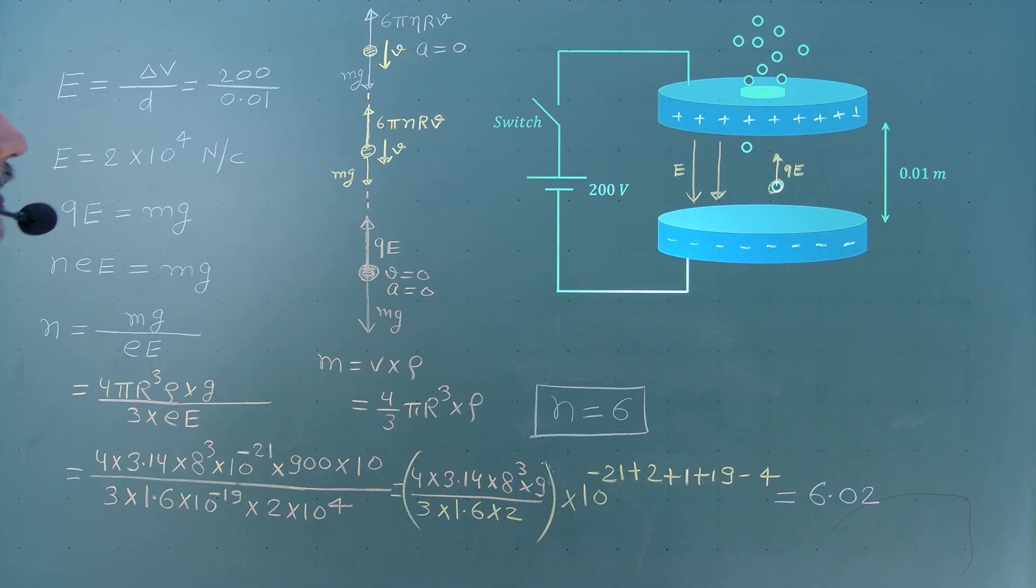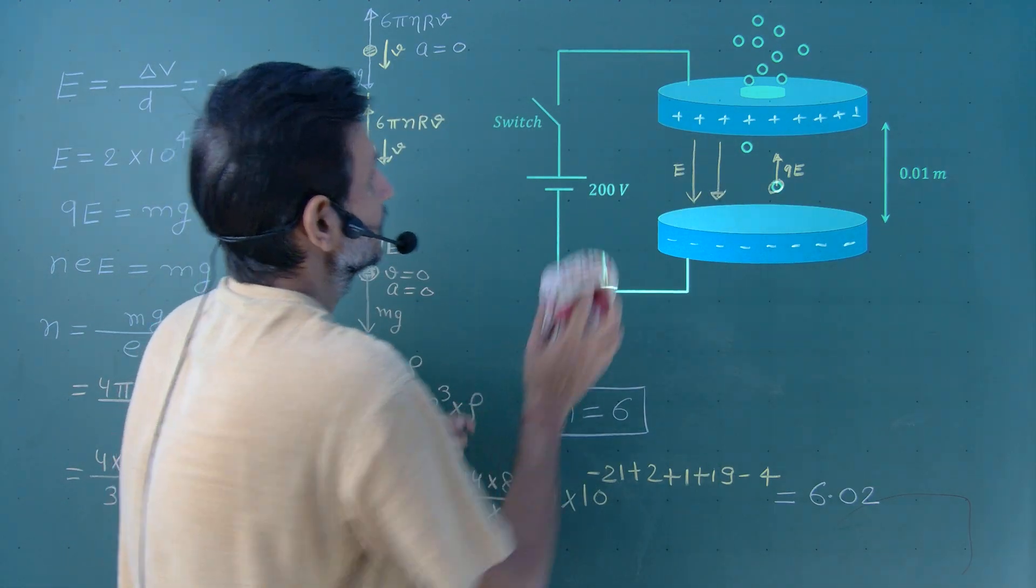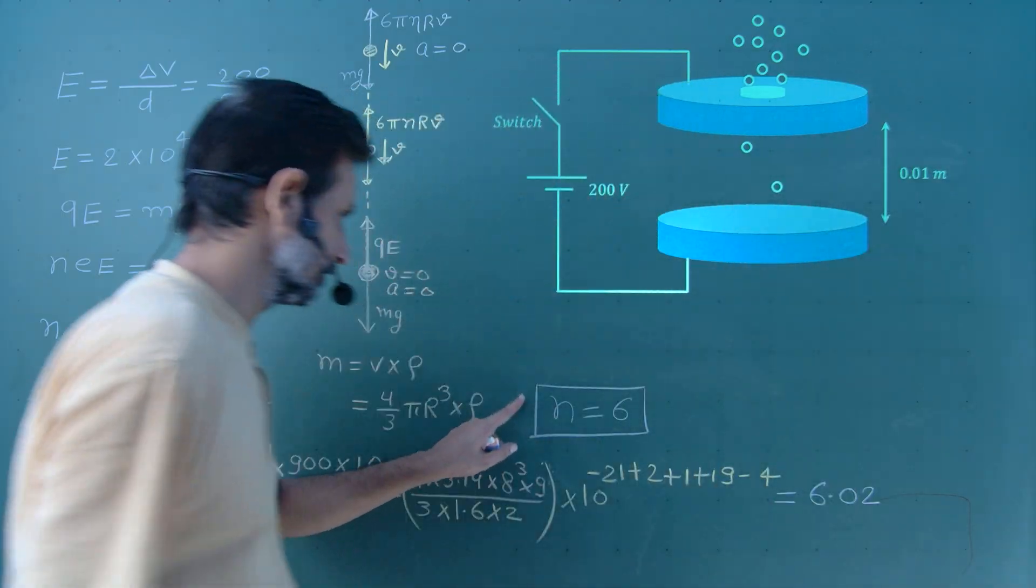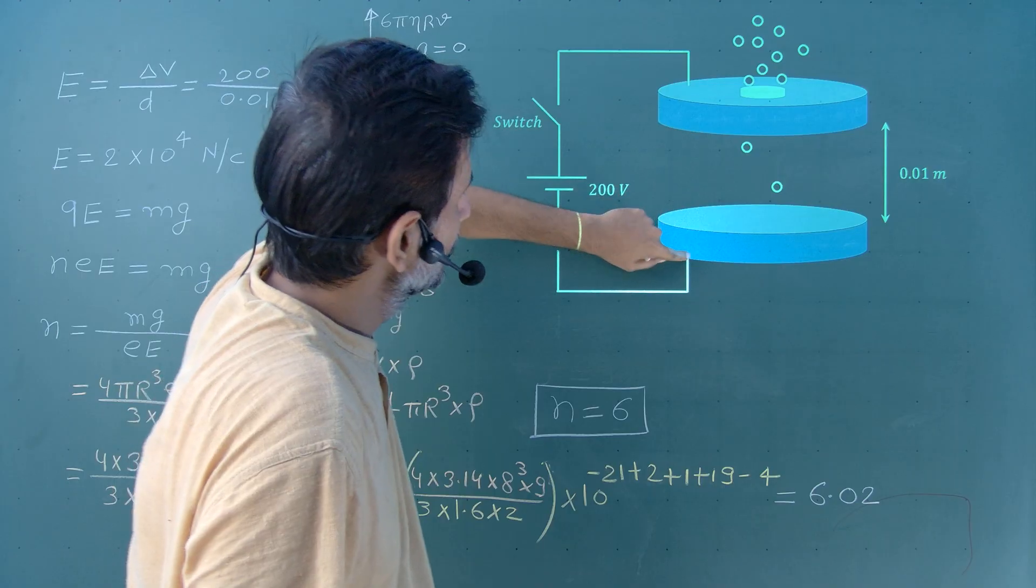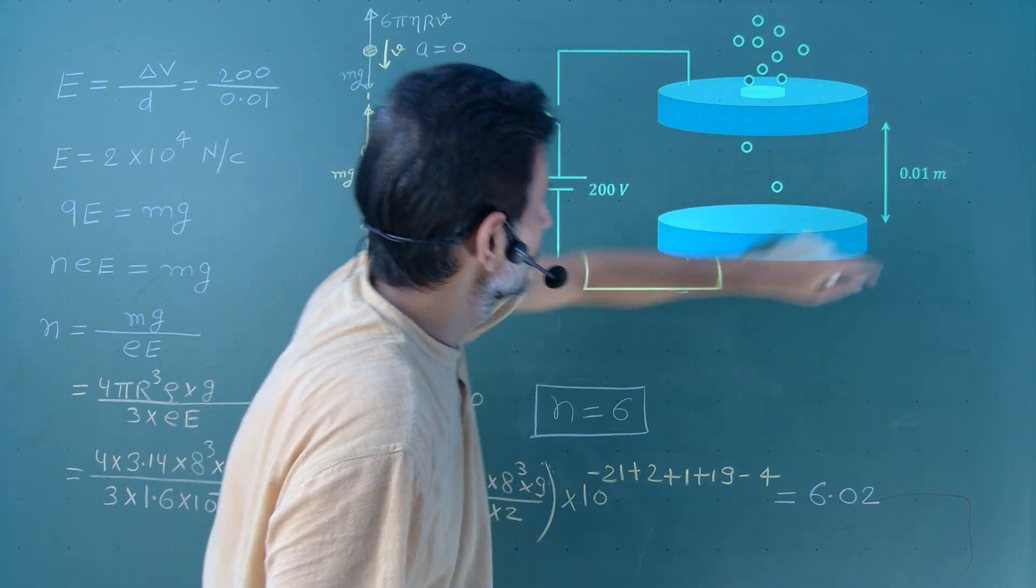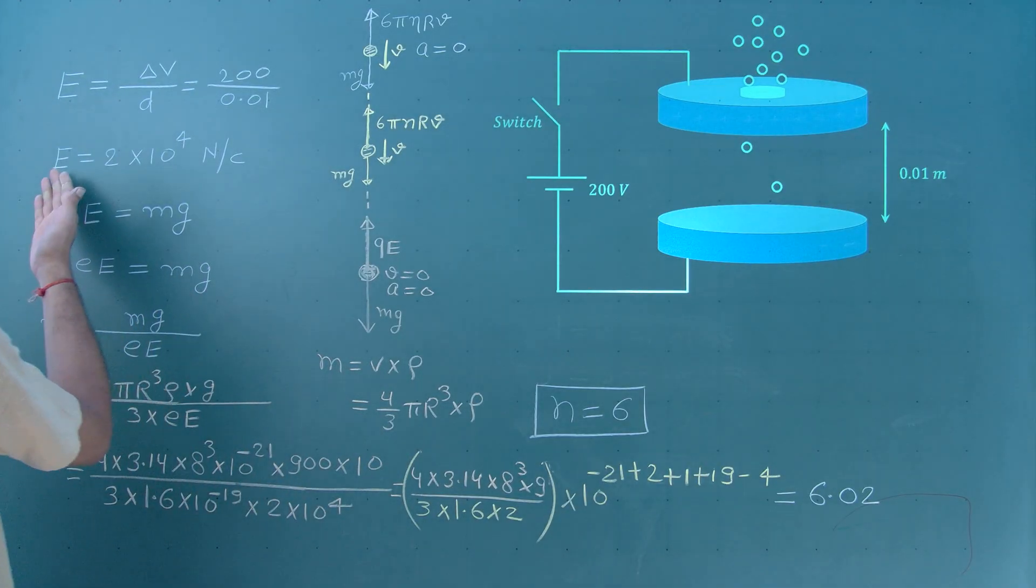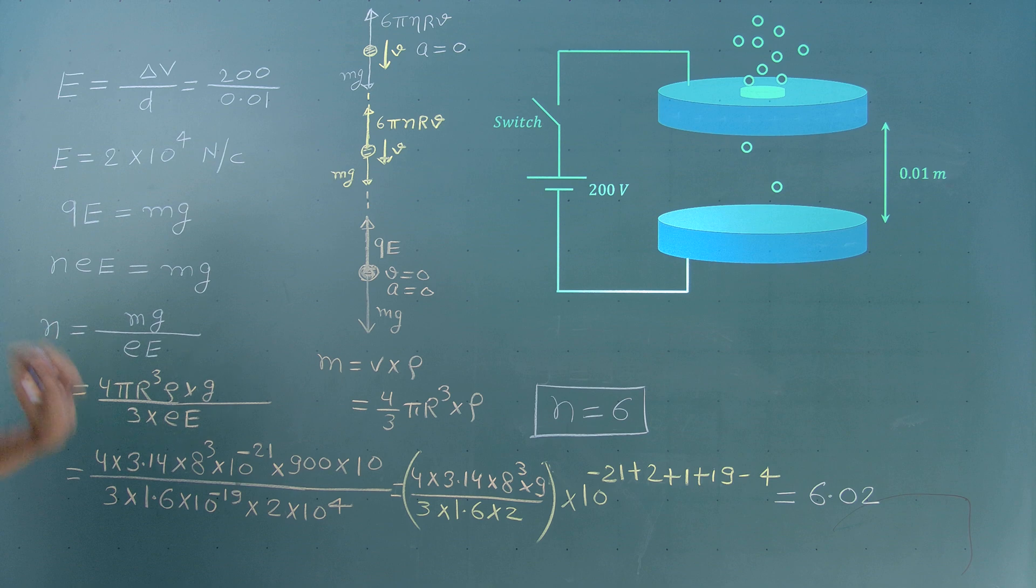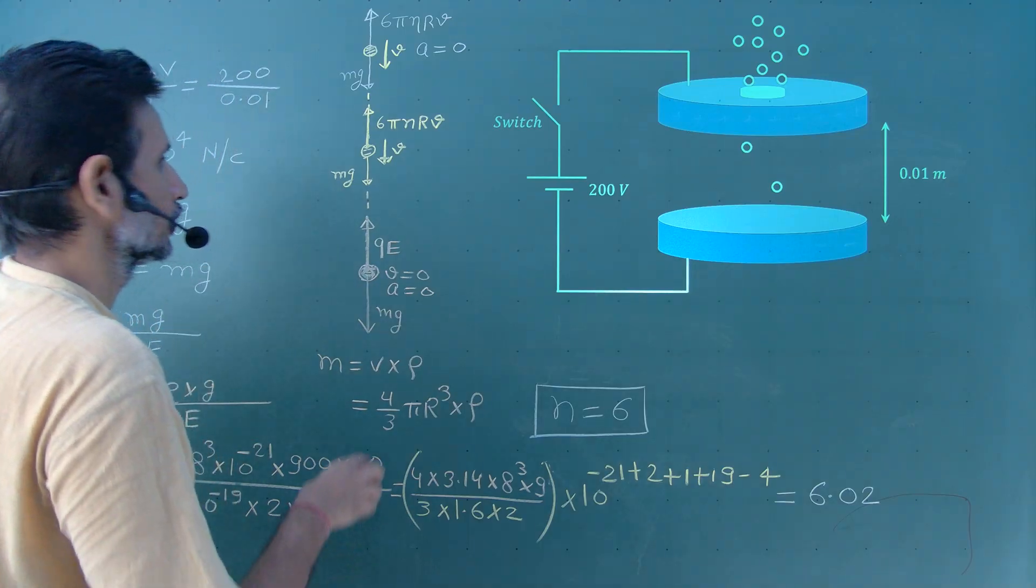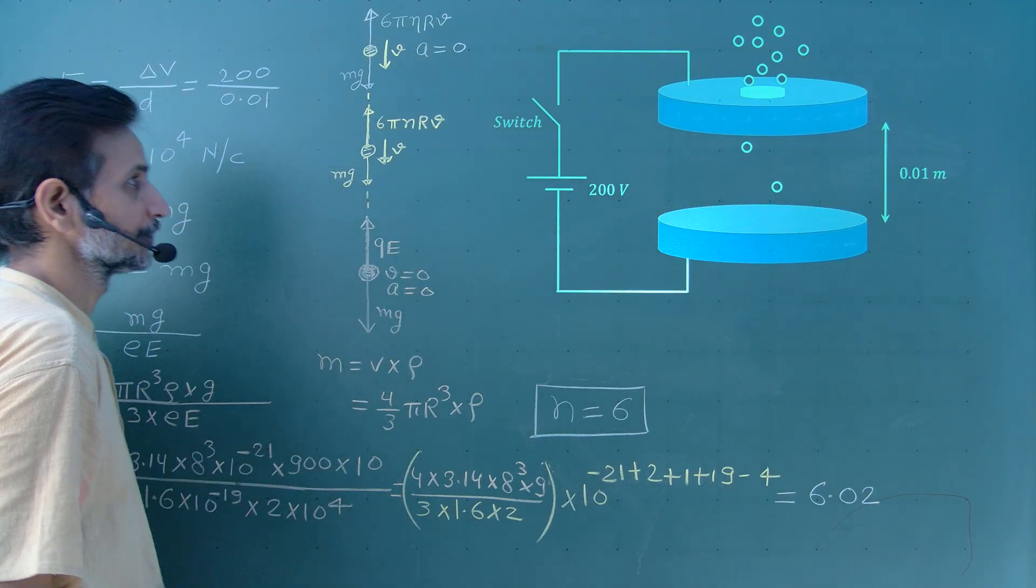Now, let us see what is the situation and how I reached this point. These are the two plates. We have given the voltage between the two plates and the distance between the two plates. So, I can easily find the value of electric field which is E equal to delta V by D. So, we can get the value of E. Once we get the value of E, we know the electric force on electron. So, electric force on electron is Q into E.